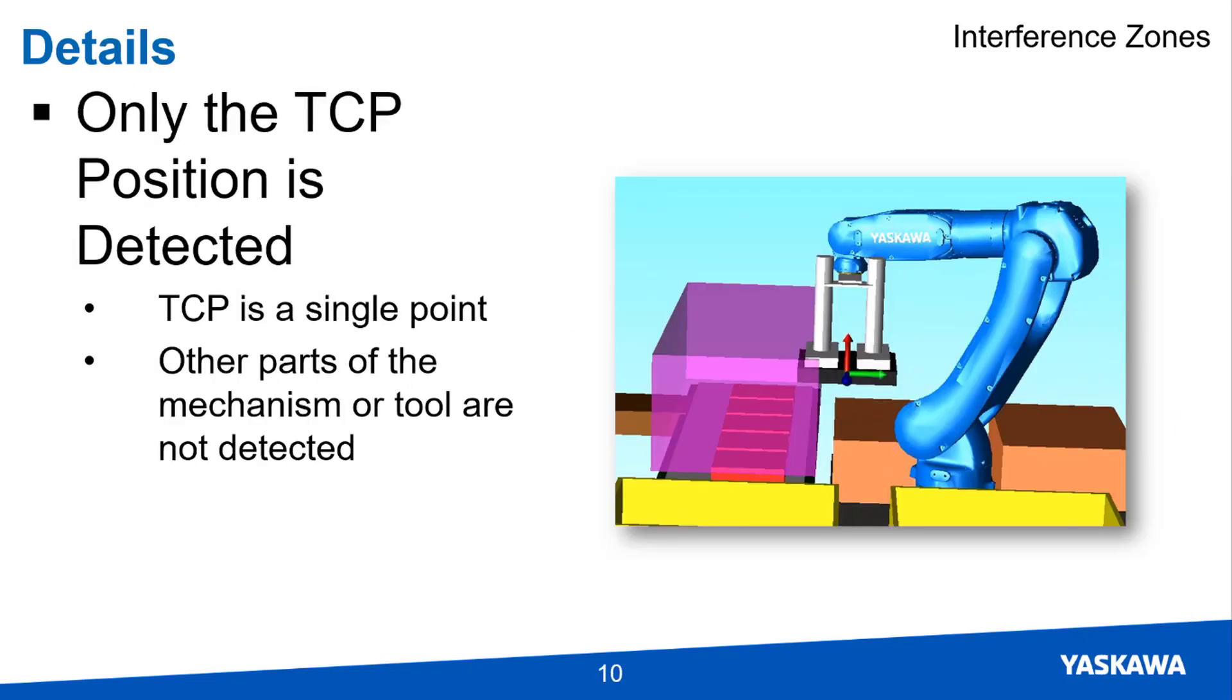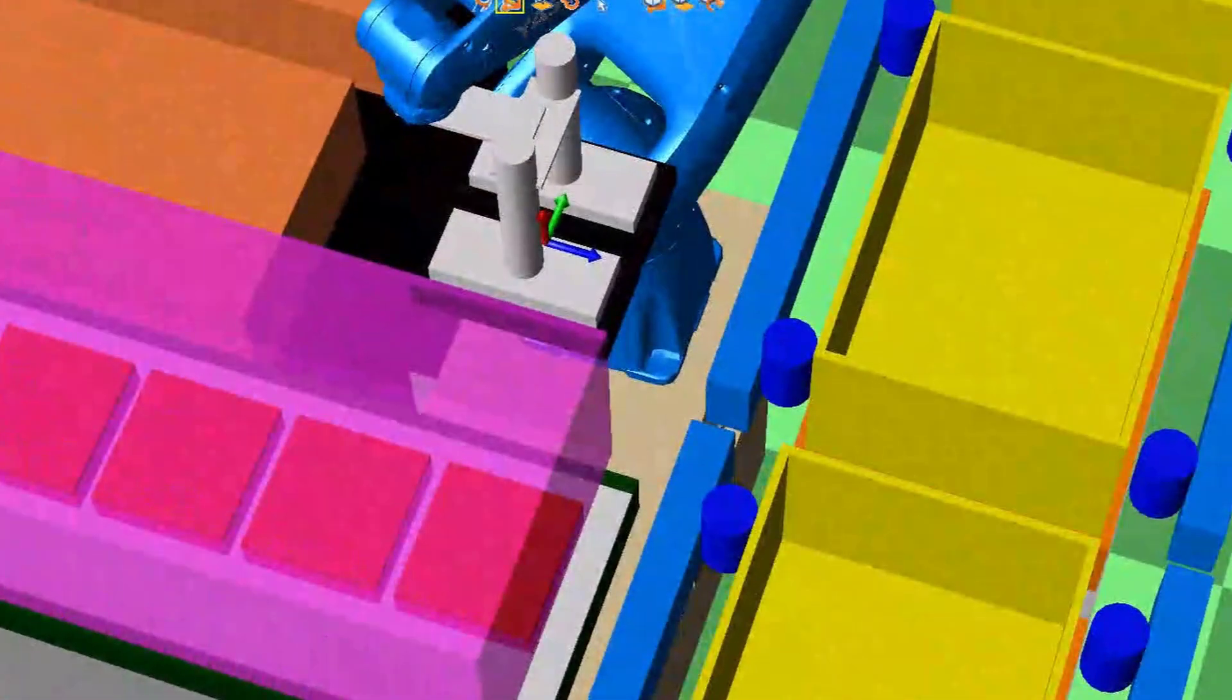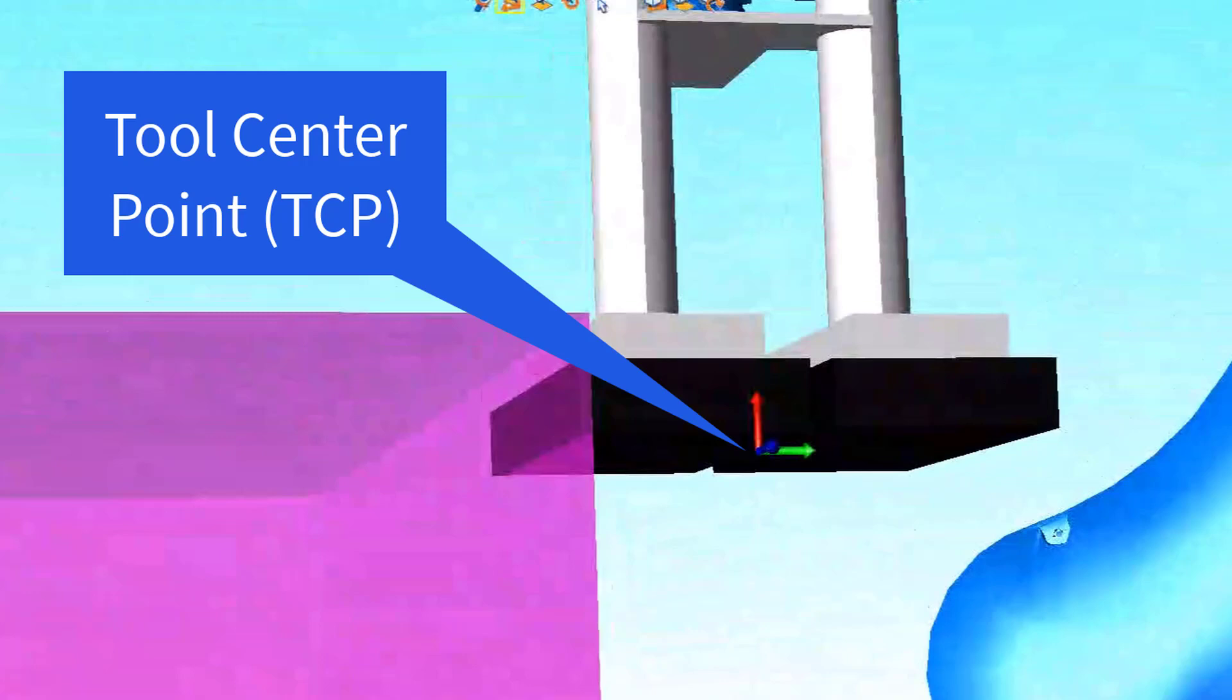Keep in mind that an interference zone is concerned only with the position of the TCP, the center point of the tool. No other parts of the mechanism or parts of the tool are detected by the interference zone. This is especially important when the tool is relatively large as the TCP is still a single point on the tool.